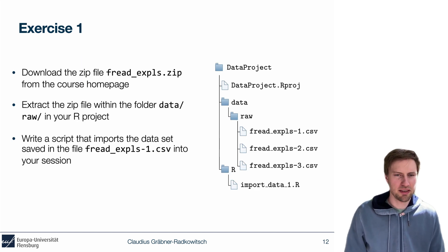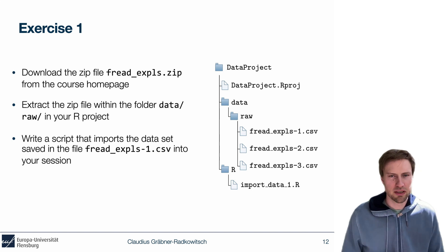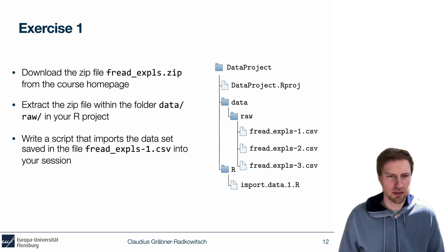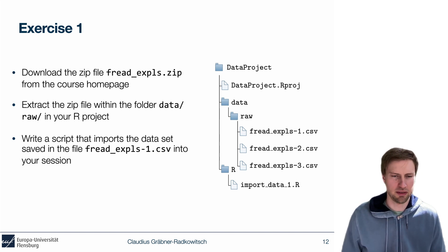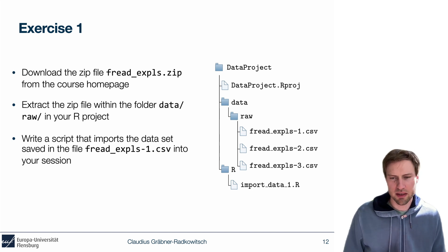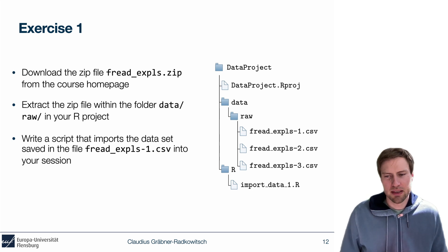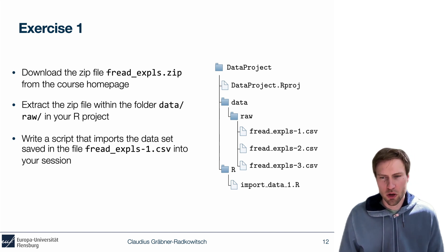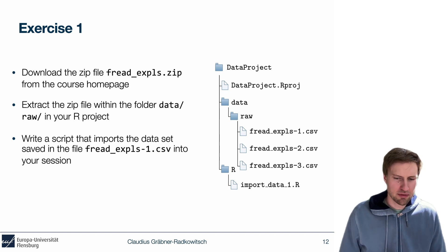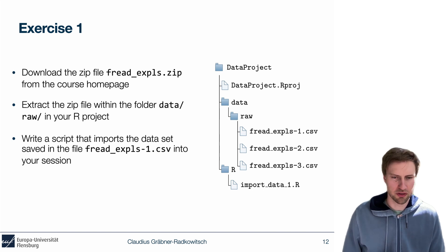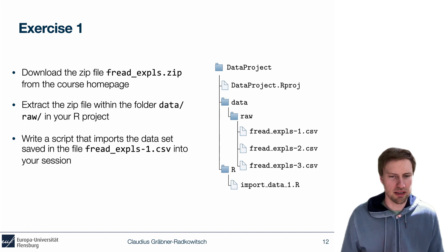Here's the first exercise. You can download the zip file called freadexamples.zip from the course homepage, extract it into the subfolder data/raw. There are three data sets in the zip file: freadexamples 1 to 3. The first exercise is to use the fread function to import freadexamples1 into your R session — write a script called import_data_1 to do so. If you already have an idea, go ahead; if not, you can watch the solution in a moment. This is the workflow to use whenever the underlying raw data is already in a good state.